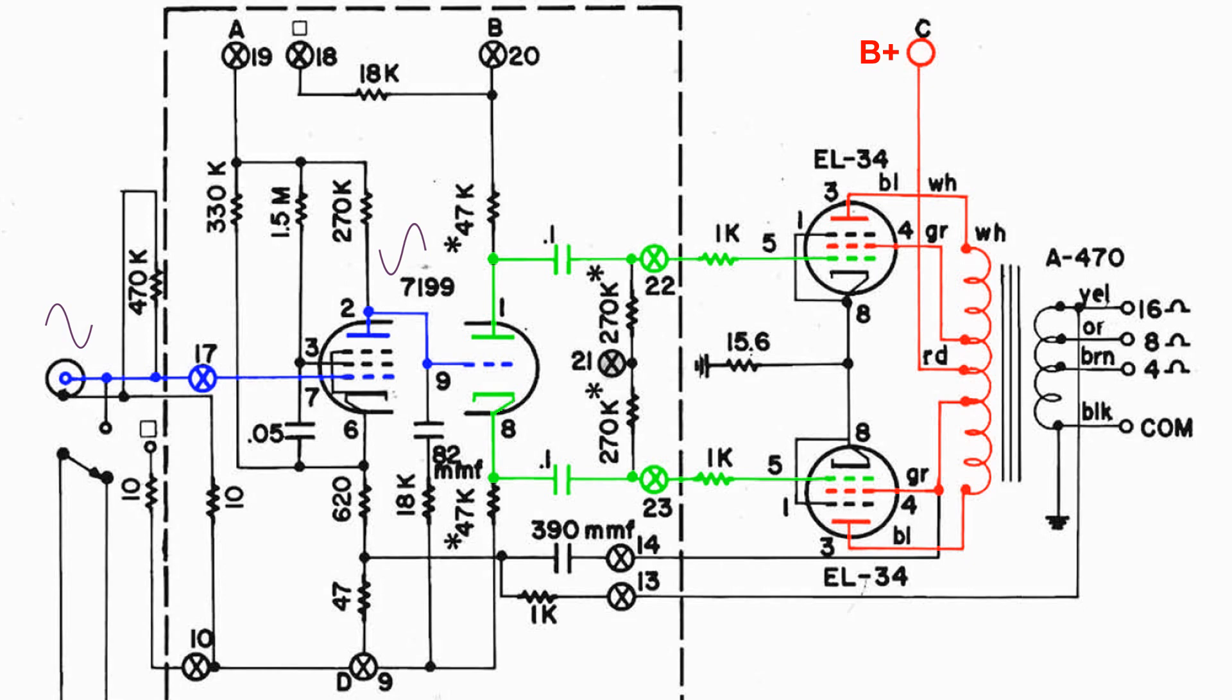Now that of course goes to the control grid of the triode of the 7199, but look what happens here. At the plate it's 180 degrees out of phase from the control grid, and the cathode is in phase with the control grid. Now we have our 180 degrees out of phase signals to drive the two output tubes.